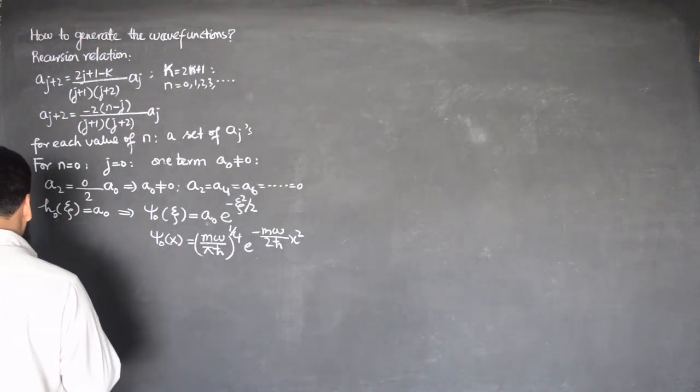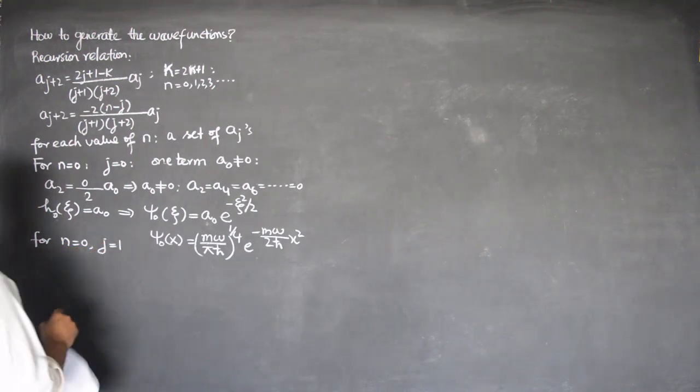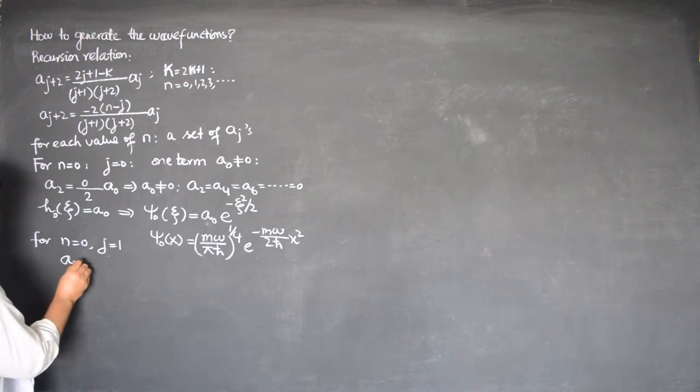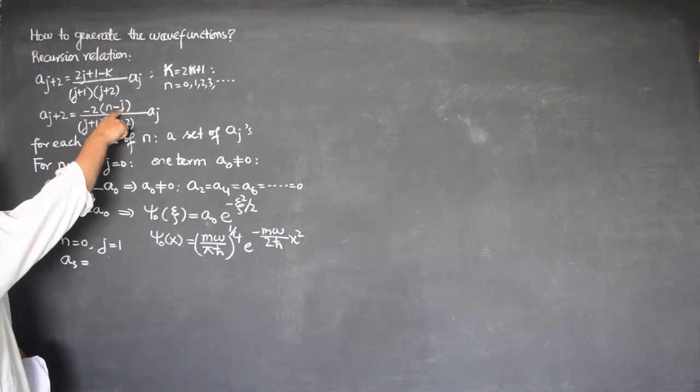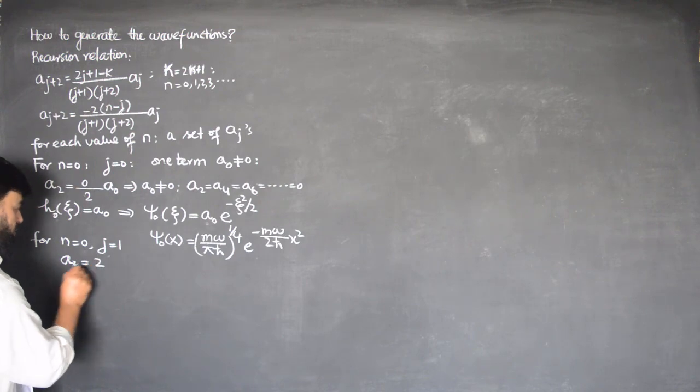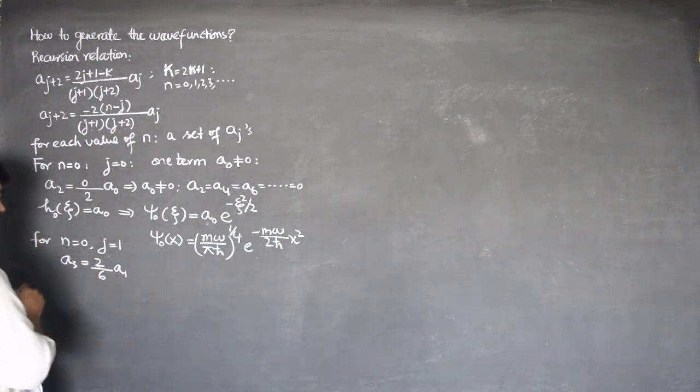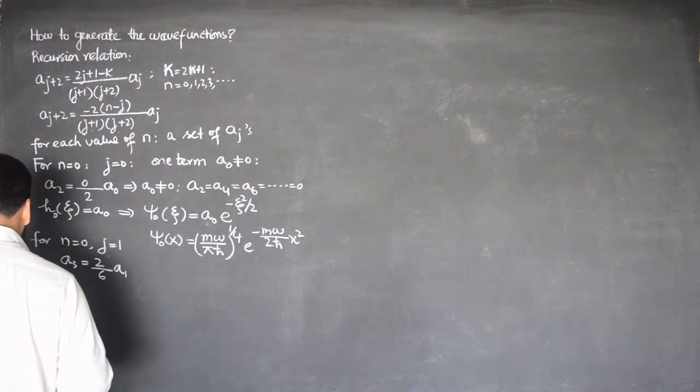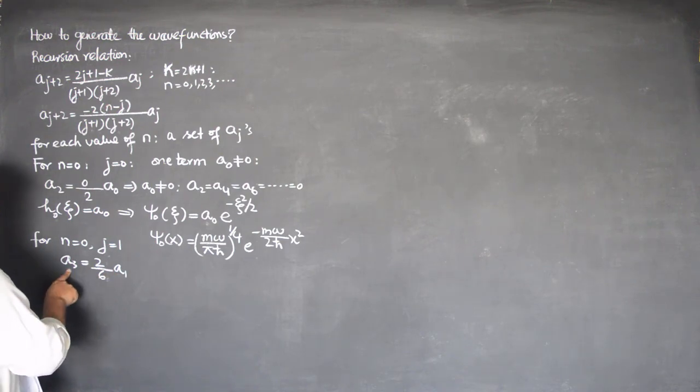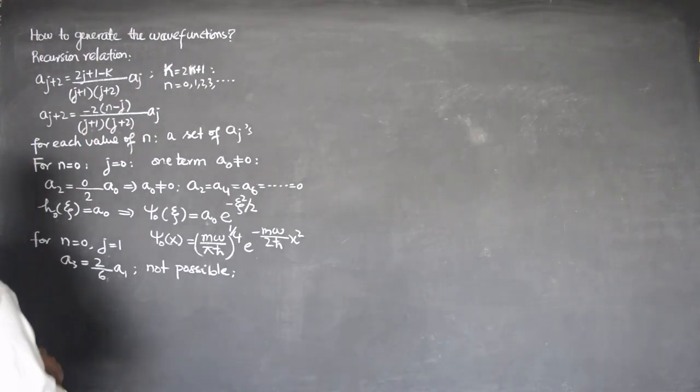Similarly, if I try for n equals 0 and j equals 1, I will get A_3 equals minus 1 over 6 times A_1. This comes out to be not possible because A_3 comes out to be 1 over 3 times A_1. A_1 is supposed to be less than A_3 and this situation is not possible. So we will have to go to other values of n.